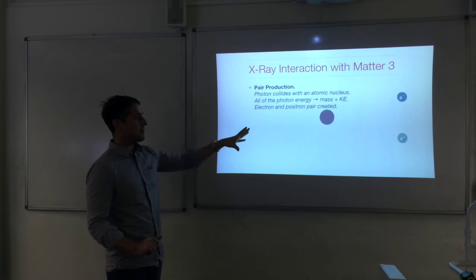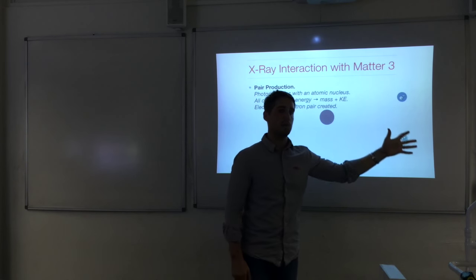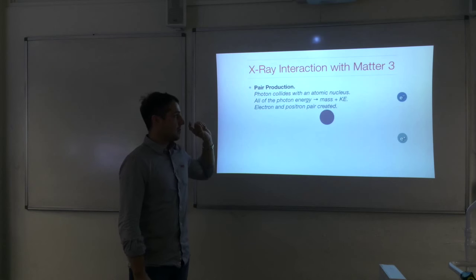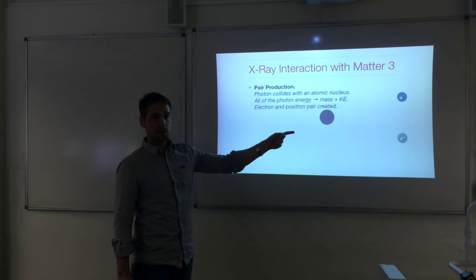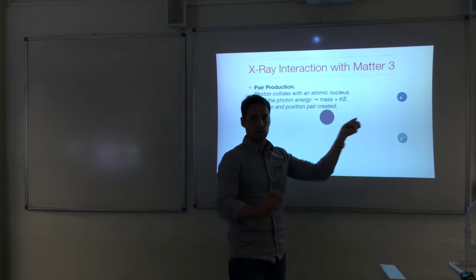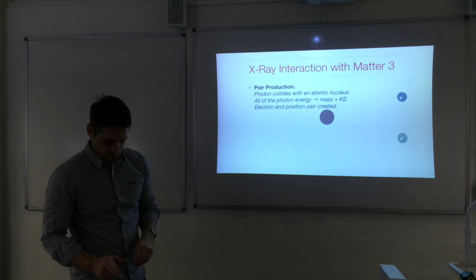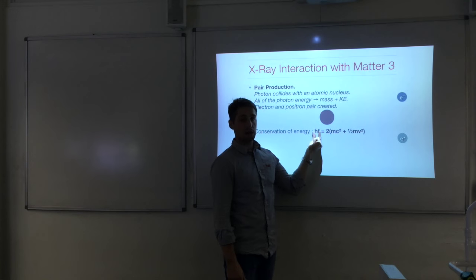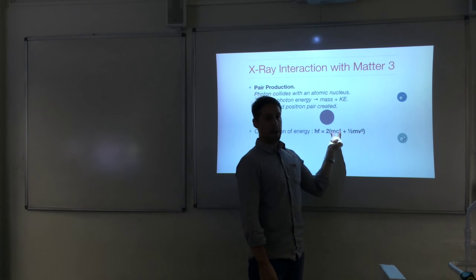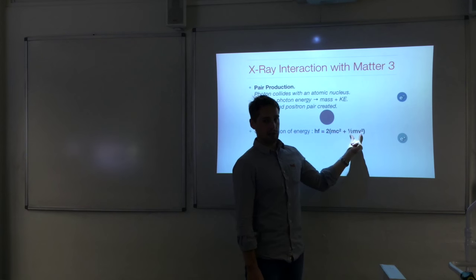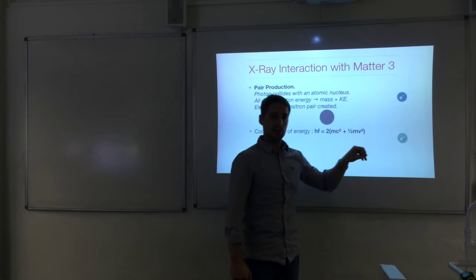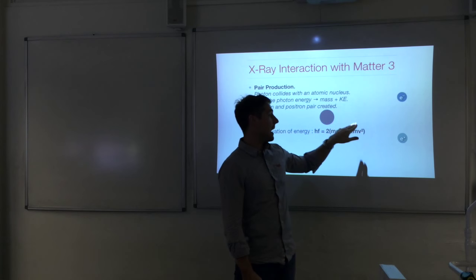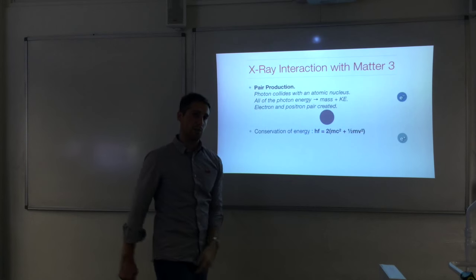Here's our nucleus — the photon comes in, is absorbed by the nucleus, and we get a pair of particles created: an electron and a positron. Some of the energy was turned into mass, and those particles are moving away from the nucleus, so there is kinetic energy involved as well. The conservation of energy gives: incident photon energy equals 2mc squared plus 2 times the kinetic energy, multiplied by two because both particles have identical masses and identical kinetic energies.